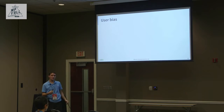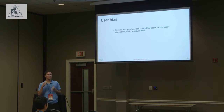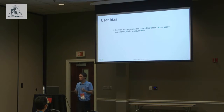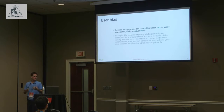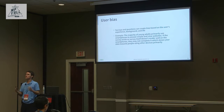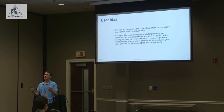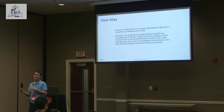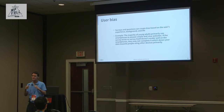One of the main types of bias is user bias — having surveys worded or structured in ways that favor certain types of users based on their experience, background, or life. For example, the majority of young adults use their mobile phones for most web usage. If your survey design doesn't work on mobile, you'll get fewer young adults responding, and your data will skew toward older generations.